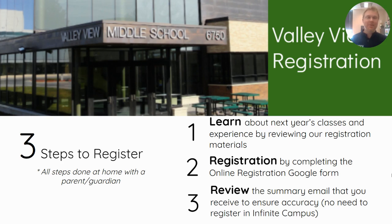There are three steps to this process for our incoming sixth graders. The first one is to learn about next year's classes and course offerings by reviewing our registration materials. The second one is to register by completing our online registration Google form. And then lastly, after you complete step two, you'll receive an automated summary email to a parent or guardian email that is inputted into that form.